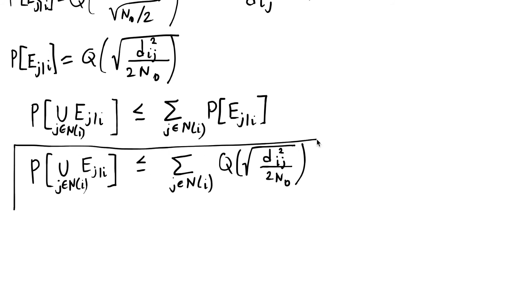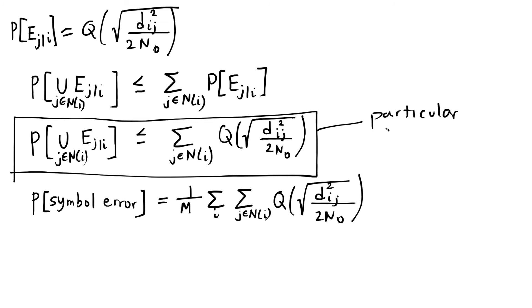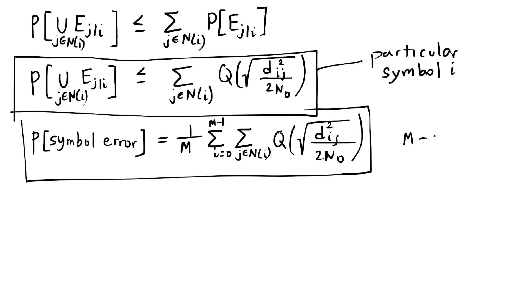So this becomes our union bound expression for all those error events for j. But we have to think about the probability of error given that any symbol is sent. The probability of symbol error is an average over all symbols from 0 to capital M minus 1. Once I have this probability of error of a particular symbol, I can take its average: 1 over M times the sum from i equals 0 to M minus 1 of each individual probability of symbol error. This gives me the overall union bound expression that tells us how to find the average symbol error probability over all symbols possible to be sent in this M-ary modulation.